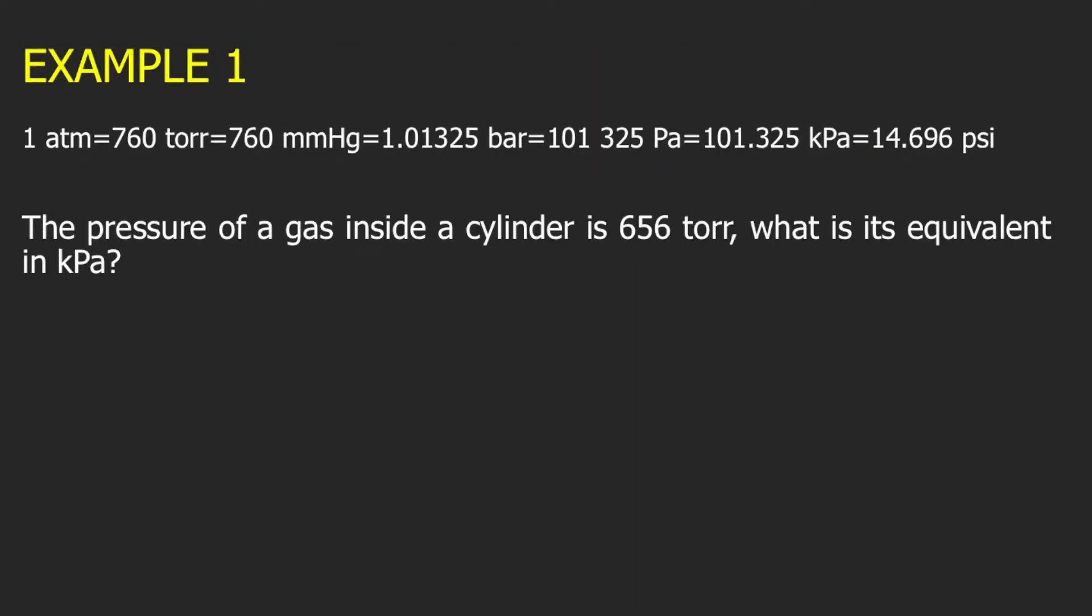Now let's move on to example 1. In all our examples, we will be using dimensional analysis in converting units of pressure. So if you're still not familiar with what is dimensional analysis, don't worry. I made a separate video about it, and you can check it using the link in the description box. Now, assuming you already know what dimensional analysis is, let's proceed to example 1. The pressure of a gas inside a cylinder is 656 torr. What is its equivalent in kPa?